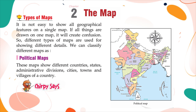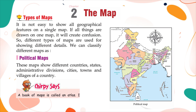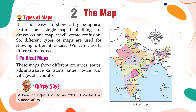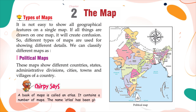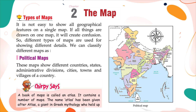Chirpy says: A book of maps is called an atlas. It contains a number of maps. The name atlas has been given after Atlas, a giant from Greek mythology who held up the world on his shoulders.